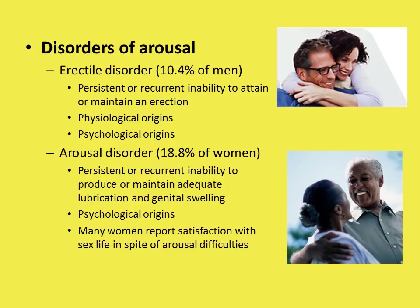Among young men that experience physiological origins, usually an injury to the genitalia is the cause. So if a man in his 30s suddenly can't get an erection, doctors are more likely to attribute that to psychological origins. However, the treatment is typically the same — a lot of times it's medication — and so it often doesn't matter how it started. But people do have arguments about whether medication should be used when it's a psychological origin.